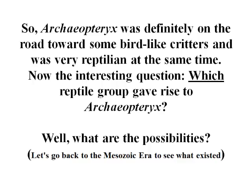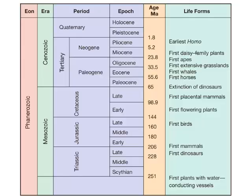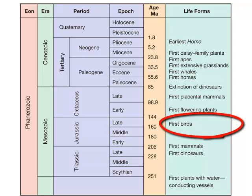So the interesting question becomes: which reptile group would have given rise to Archaeopteryx? We have to go back to the Mesozoic era to see what sorts of reptiles were running around. There are three eras — the Paleozoic, Mesozoic, and Cenozoic — and focusing on the Triassic, Jurassic, and Cretaceous periods: about 160 million years ago in the mid to late Jurassic is when Archaeopteryx was running around.